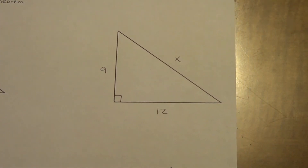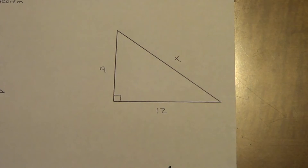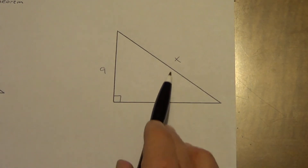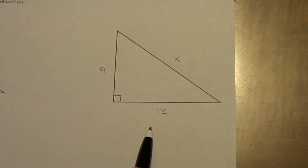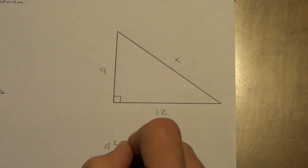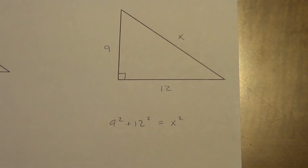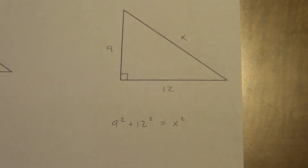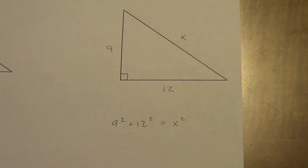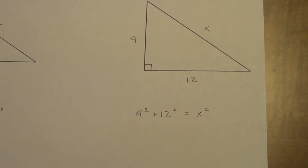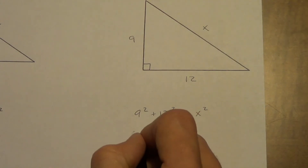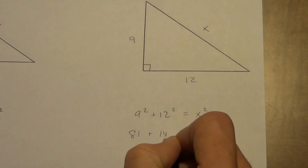Let's take a look at an example. Over here we have a right triangle with sides 9, 12, and X. A and B are our legs, so 9 and 12. So 9 squared plus 12 squared equals X squared. It would be really helpful if you show your work the way I'm going to do it here — if you don't, I might not be able to follow it and might mark it wrong. So 9 squared is 81, and 12 squared is 144.